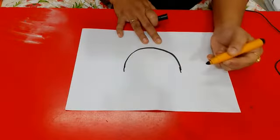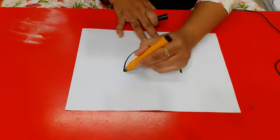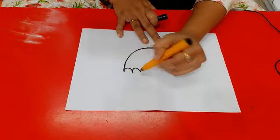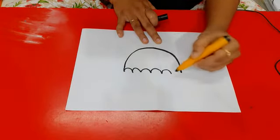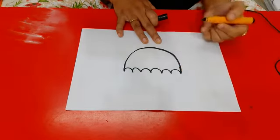Okay, we have to draw small downward open curves from the end of the umbrella to the other end.